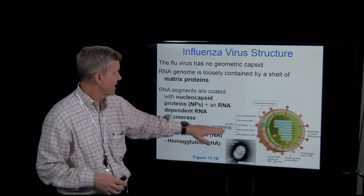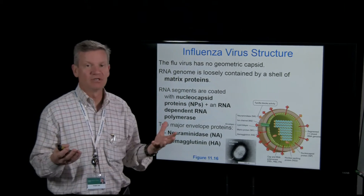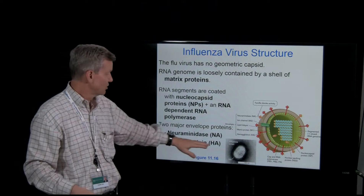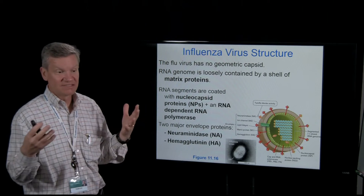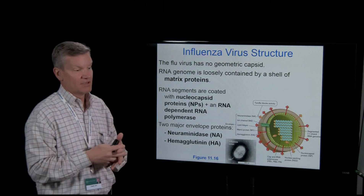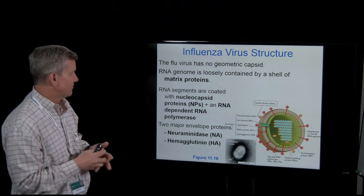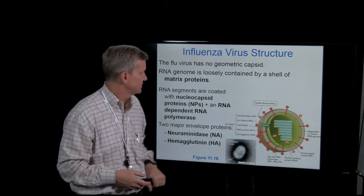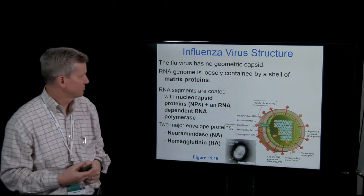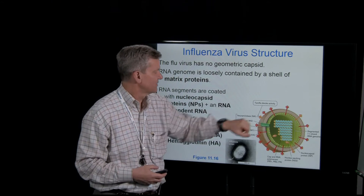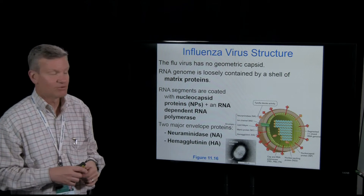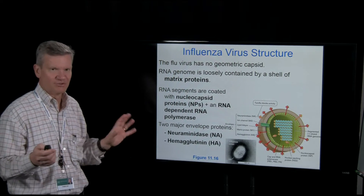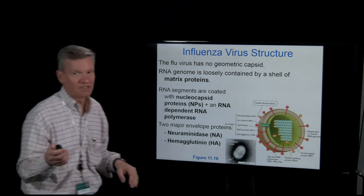Influenza also has two major envelope proteins: neuraminidase and hemagglutinin. When people say H5N1 or H9N7, H means hemagglutinin and N means neuraminidase — that's how we type the viruses. In the structure of the virus: hemagglutinin is the viral receptor that binds to respiratory epithelium, neuraminidase is another surface protein, and there's an ion channel called M2 that is really important. The green matrix serves as a pseudocapsid while the nucleocapsid protects the RNA.